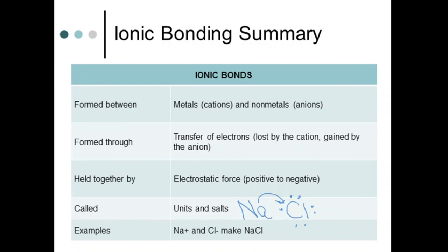If sodium has one valence electron and transfers it to the chlorine, the sodium becomes positively charged because it lost its valence electron, and the chlorine becomes negatively charged because it gained a valence electron from the sodium. The 1+ and the 1- cancel each other out into a stable sodium chloride unit.